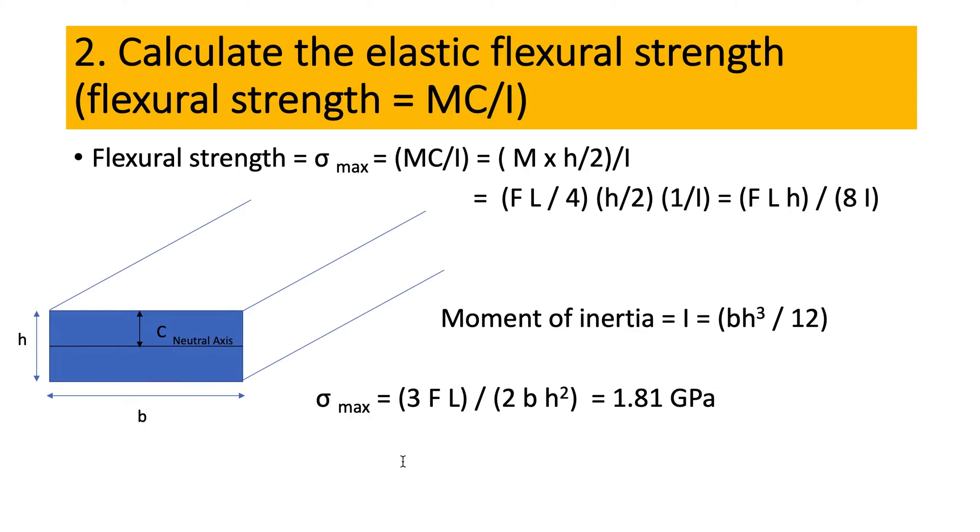If we plug I in here, it will be 3FL/(2bh²). So this is F, the force at the proportional limit, which is here at this point. L is the length of the specimen, b is the width of the specimen, and h is the thickness.